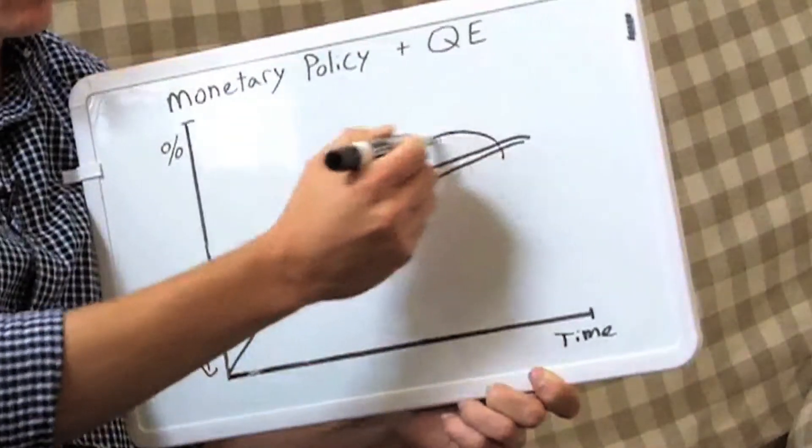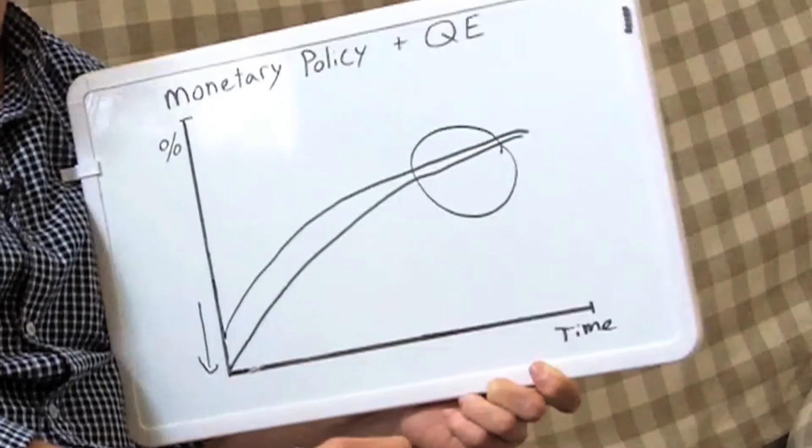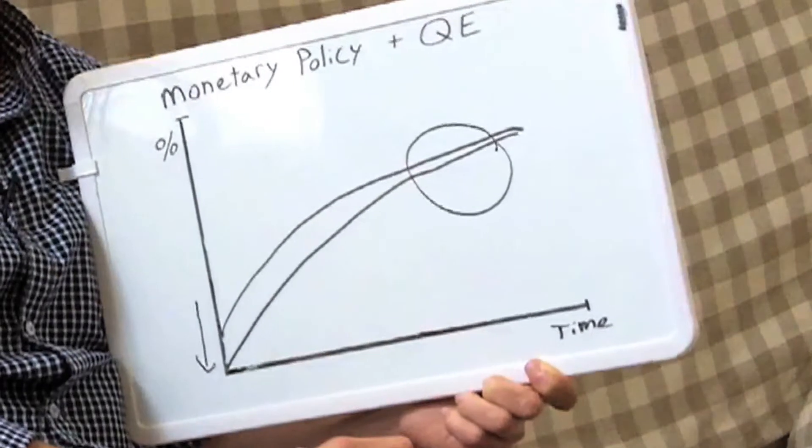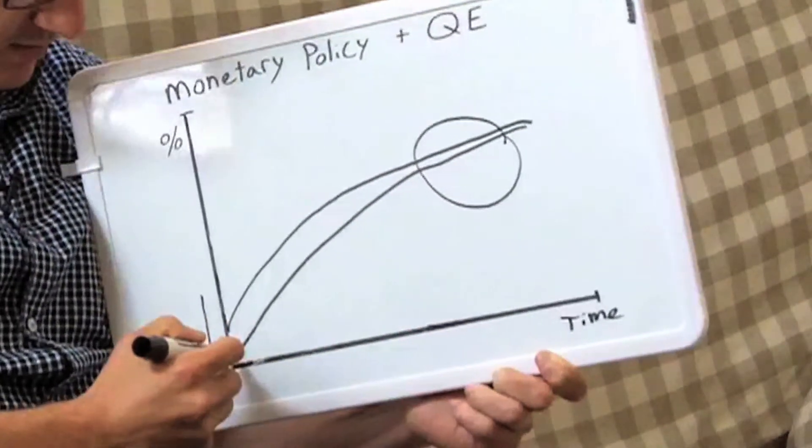What the Fed does is buys longer-term bonds, and it hopes that in buying longer-term bonds it'll push down the interest rates on these long-term bonds, and that would hopefully cause the yield curve to look something like this.